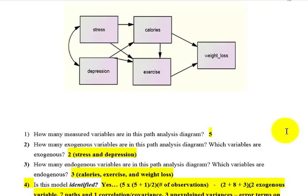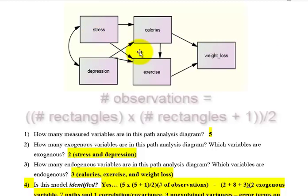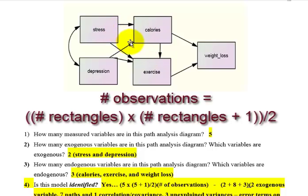Is this model identified? The process for identification works like this: take the number of measured variables — those are the rectangles, so we've got five — and multiply five times the number of measured variables plus one, so five times six, which is 30. Divide by two, giving us 15. That's your total number of observations.